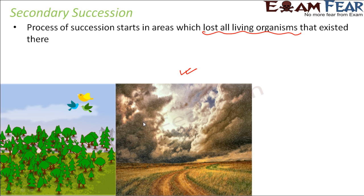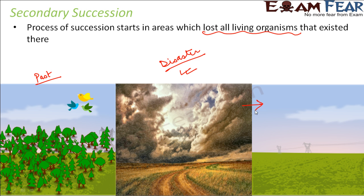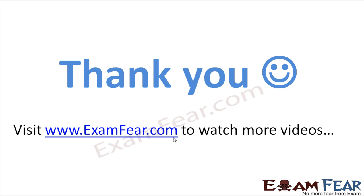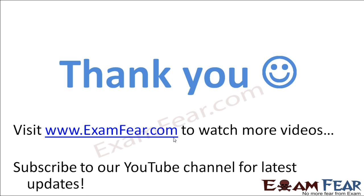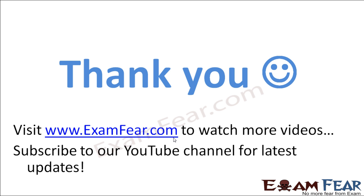In the visual example shown, the present state of a region is completely devastated, but in the past it had a full ecosystem with plants, birds, insects, and animals. Due to some natural or human-induced disaster, all the living organisms were lost. But again, over a long period of time with gradual change, the area will start to have living organisms — you can see some greenery returning, with plants beginning to grow, and eventually the entire ecosystem will develop again. Thank you, please visit examfew.com to watch more educational videos.